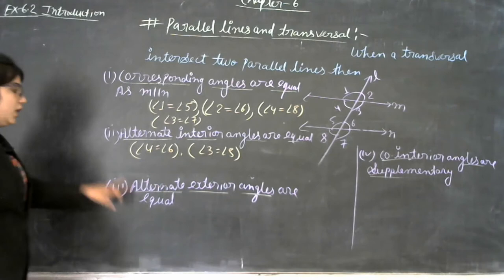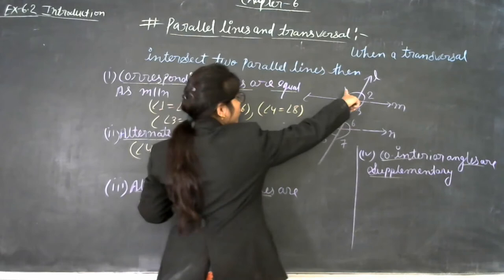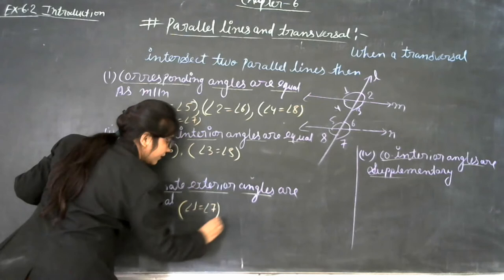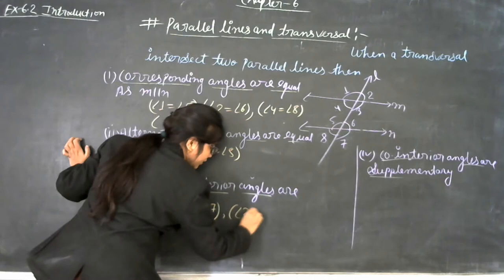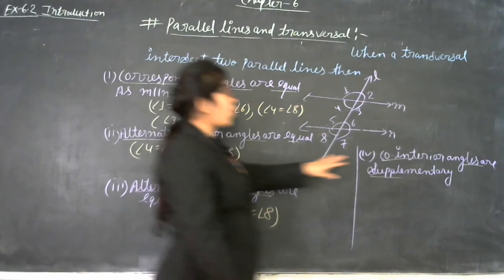When a transversal intersects two parallel lines, the alternate exterior angles are also equal. So angle 1 is equal to angle 7, and angle 2 is equal to angle 8. These are the alternate exterior angles.